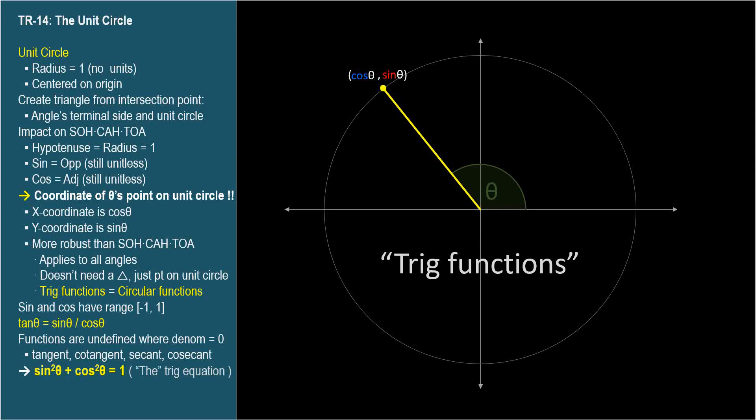Triangles are great for SOHCAHTOA and learning what the trig function means, but you don't really need a triangle at all. You just need a circle. This is a good time to point out, you must know that for standard position angles, cosine corresponds to x, and sine corresponds to y.